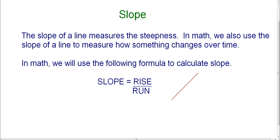That formula is that slope equals the rise over the run. We know that every line or mountain, every hill, rises or falls and runs either to the left or to the right — that's where we get this particular formula. So whenever you write slope, you're going to be writing a fraction. The numerator is going to represent whether it rises or falls, up or down, and the denominator is going to refer to whether it's running left or right. Keep in mind that you're going to be writing a fraction — rise over run.